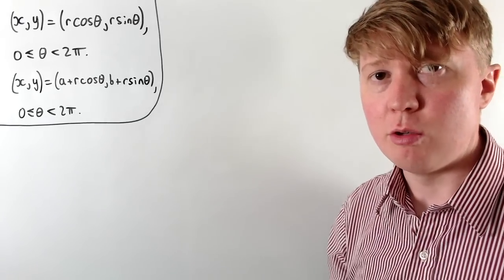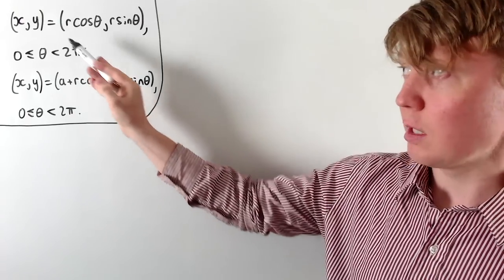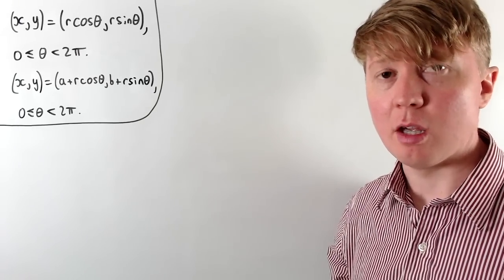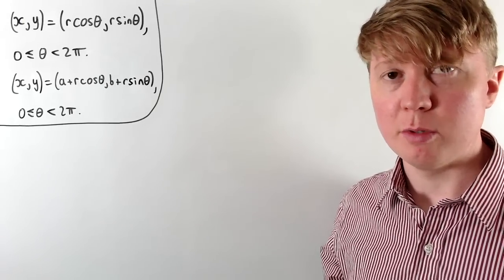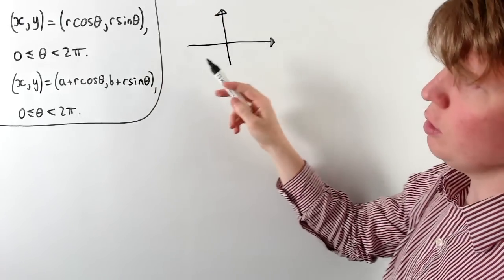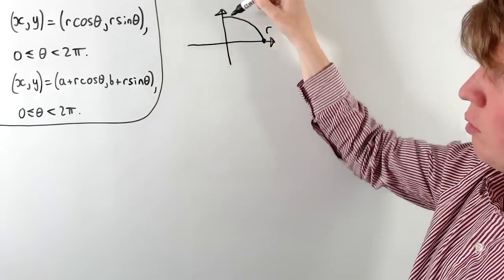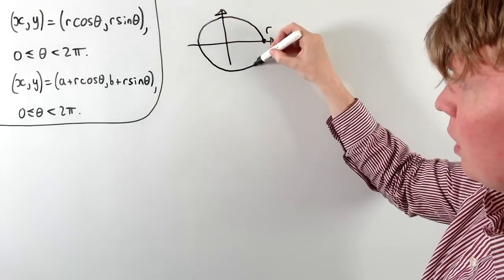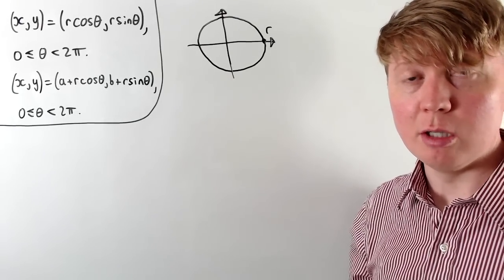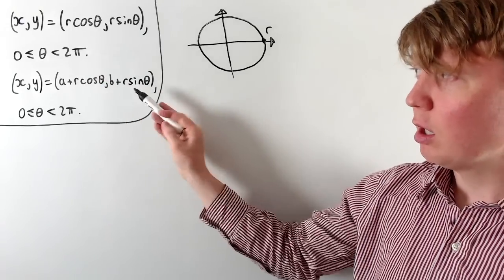Our previous equation of a circle in 2D isn't the only equation — we can also have a parametric equation. For example, x = r cos θ and y = r sin θ, where θ goes from 0 to 2π radians. When θ = 0, x = r and y = 0; when θ = π/2, y = r and x = 0; and so on around the circle, giving us a circle of radius r centred at the origin. For a circle with any centre, we just add a and b to our x and y coordinates respectively, giving the general parametric form of a circle in 2D.